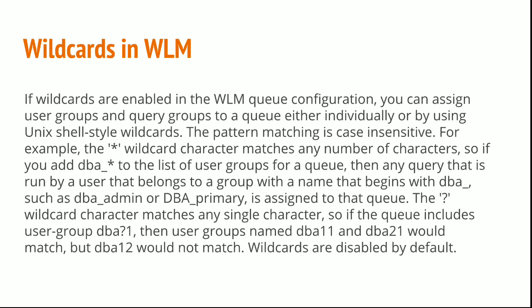If wildcards are enabled in the WLM queue configuration, you can assign user groups and query groups to a queue either individually or by using Unix shell style wildcards. The pattern matching is case insensitive. For example, the wildcard asterisk character matches any number of characters. So if you add dba_* to the list of user groups for a queue, then any query run by a user belonging to a group with a name beginning with dba_ such as dba_admin or dba_primary is assigned to the queue. The question mark wildcard character matches any single character. So if the queue includes user group dba?1, then user groups named dba11 and dba21 would match but dba12 would not. Wildcards are disabled by default.